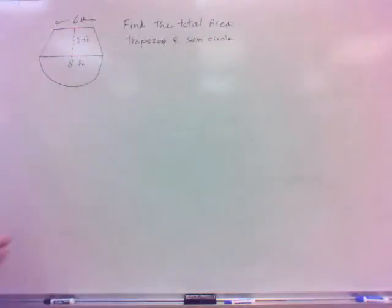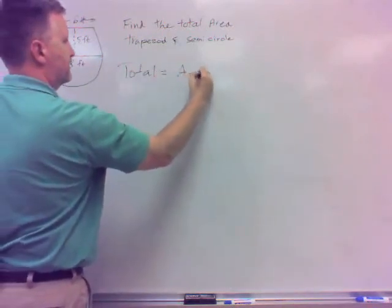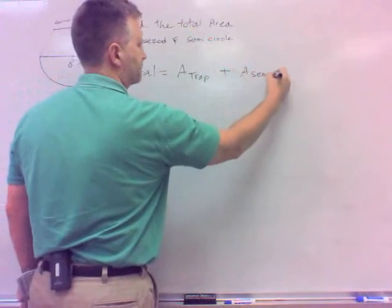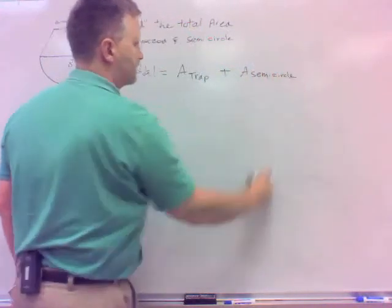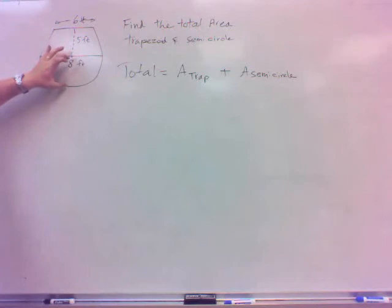So the total area is going to be the area of the trapezoid plus the area of the semicircle. In this case, I'm going to add the two areas. The shaded, I was subtracting the areas. Here, I'm going to add the areas. So I'm going to take this area plus that area.